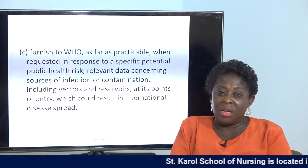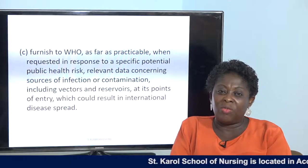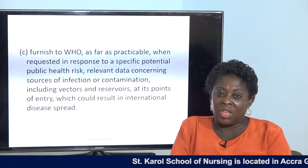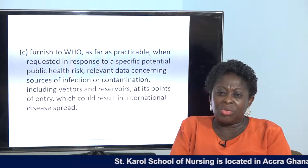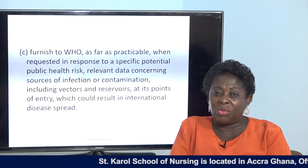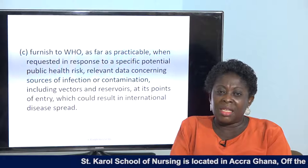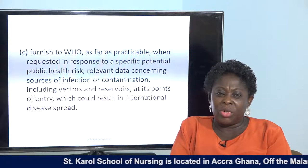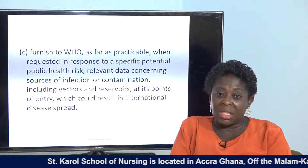Between the two ports, you need to designate one to carry out the capacity set out in Annex 1. You look at the public health risk existing, the relevant data concerning sources of infection or contamination — whether it's from travelers, from facilities at the point of entry, from water, food, contact, or vectors — and the reservoir of infection at the point of entry. The country needs to furnish WHO with all this information before you can designate the port.